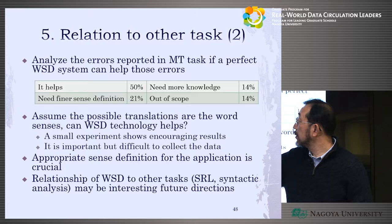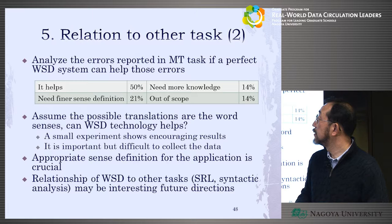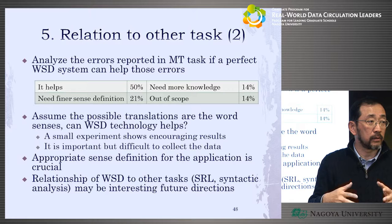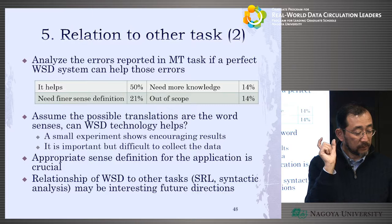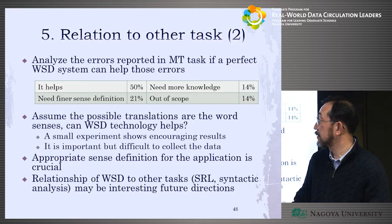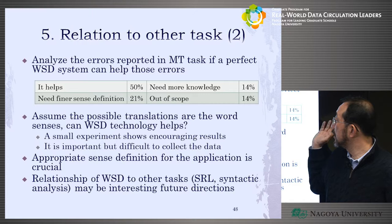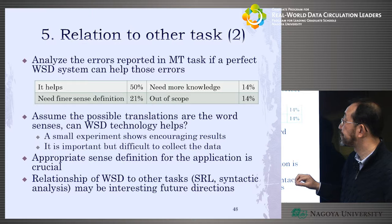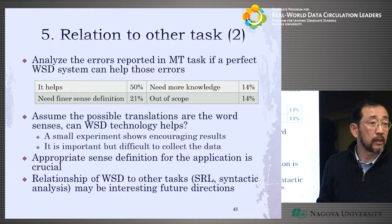They also found that 20% of cases need finer sense definition — the word sense definitions in existing dictionaries are not good enough, and senses need to be separated in a much finer way. And 14% are not word sense disambiguation problems at all — they need more world knowledge. This encourages machine translation researchers by showing that half the problem can be solved by word sense disambiguation.